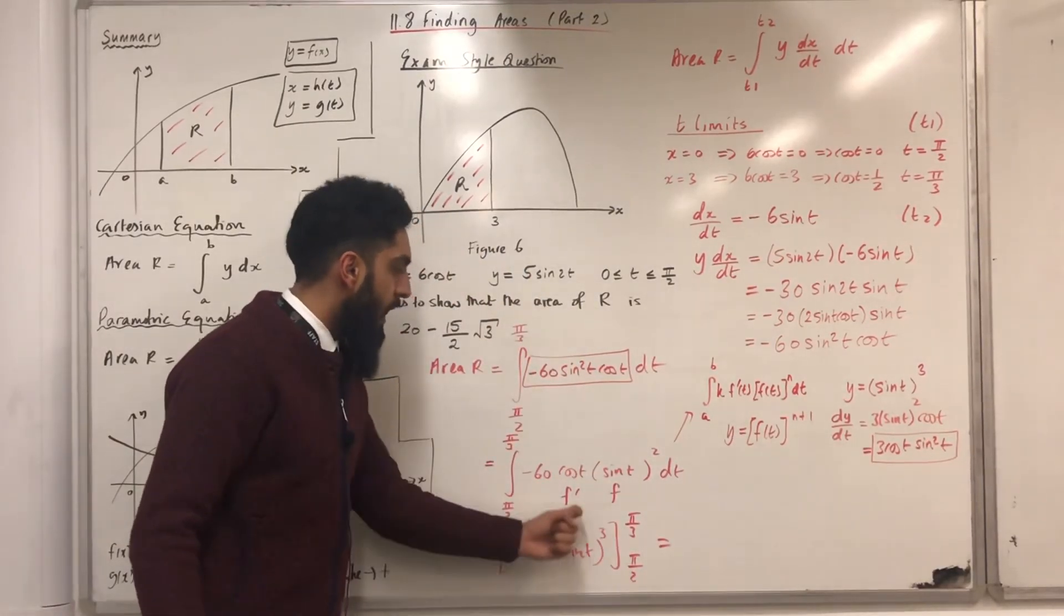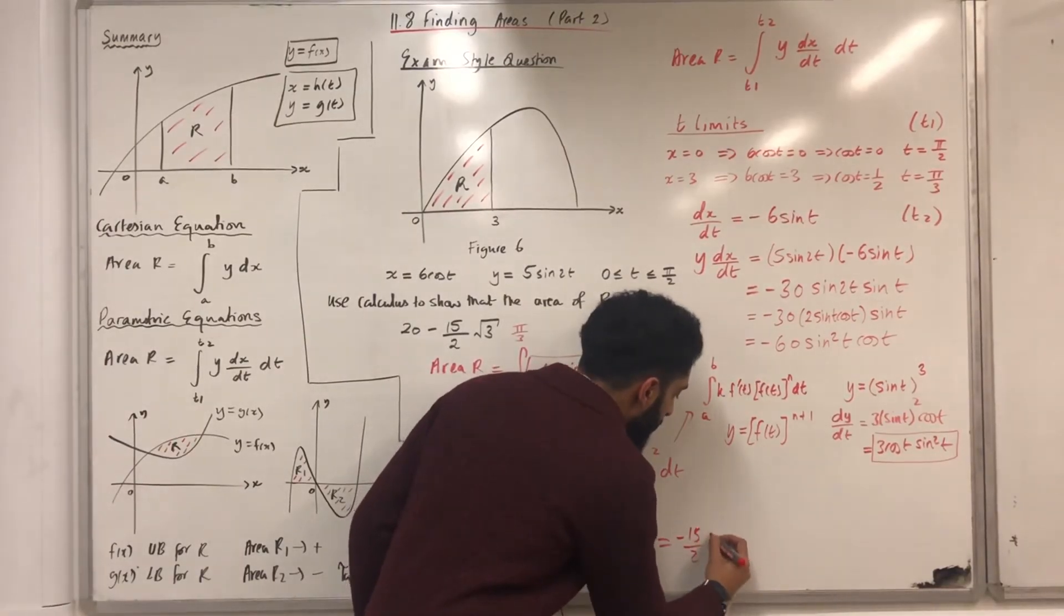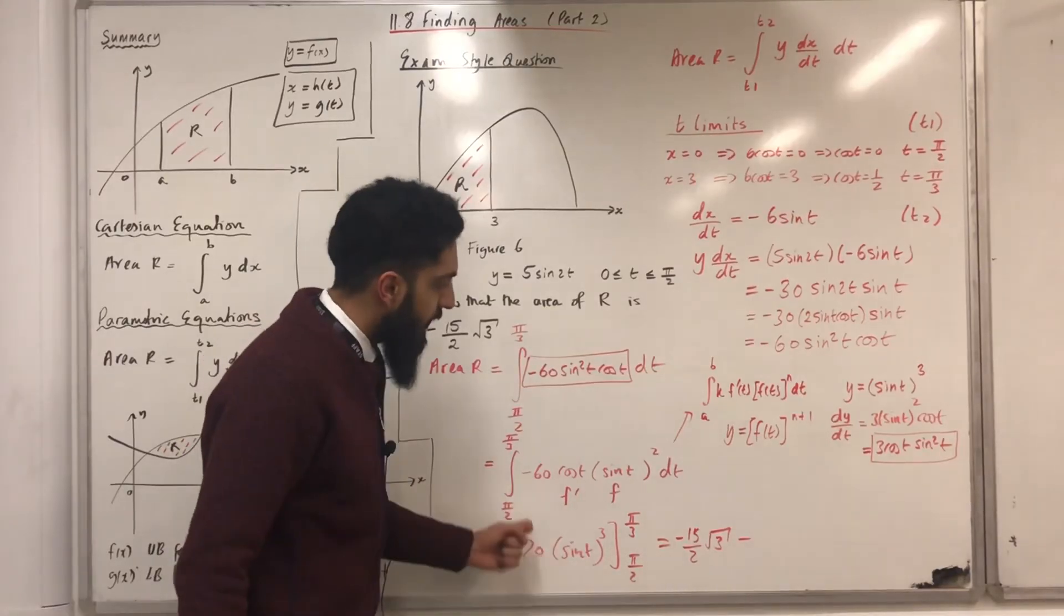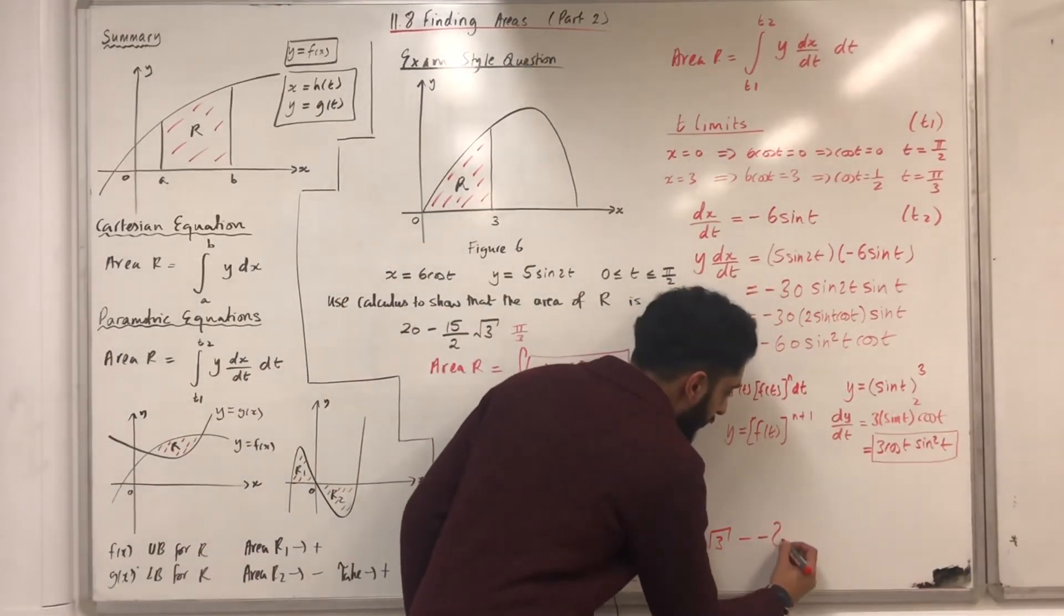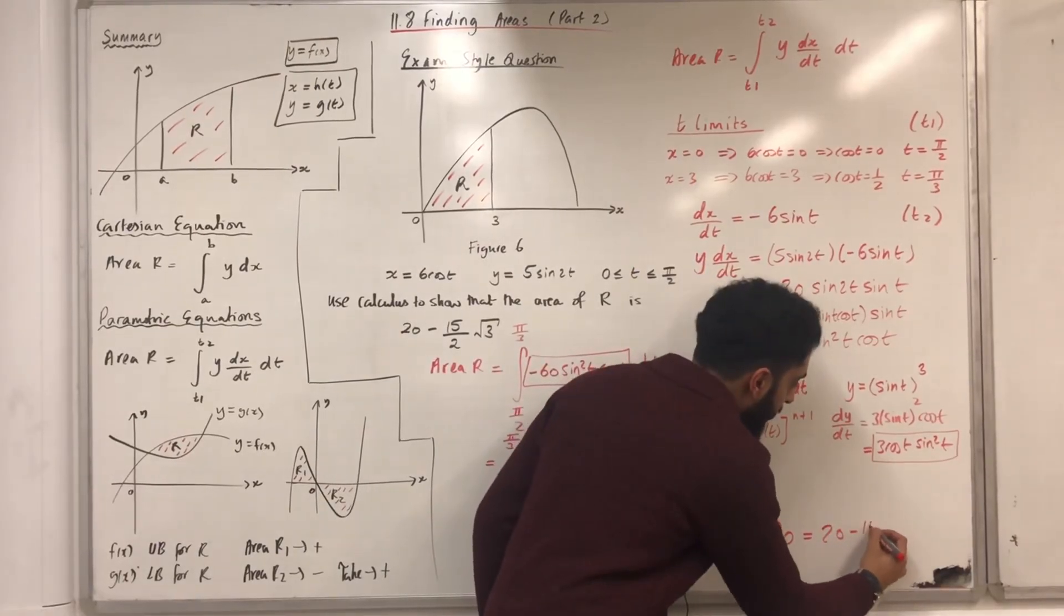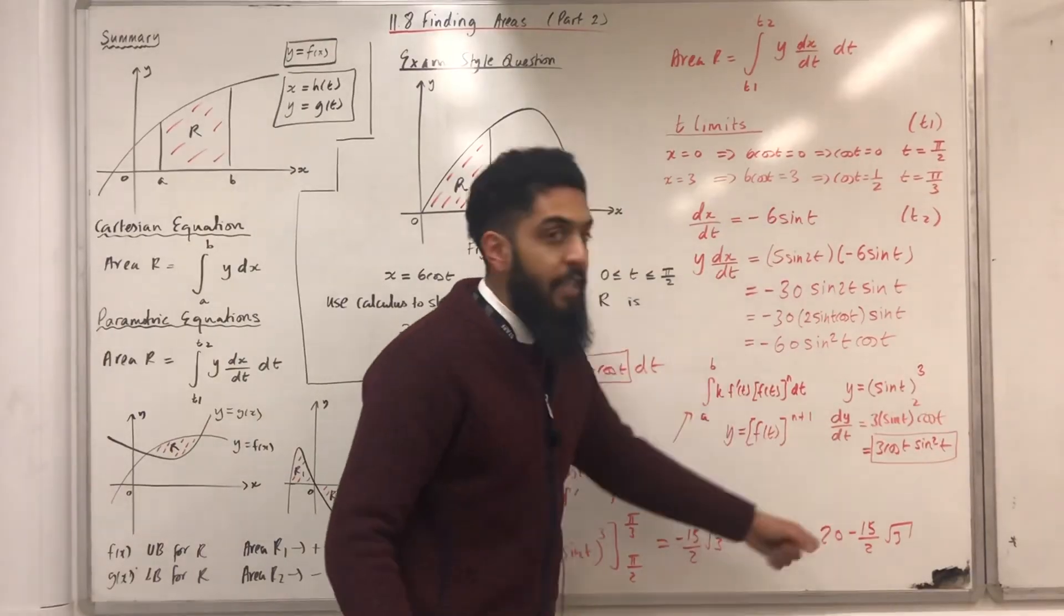Now, I'll substitute pi over 3 into here to give me minus 15 over 2 square root 3, take away, I'll substitute pi over 2 into here to give me minus 20. I can rewrite this as 20 minus 15 over 2 square root 3. And that is precisely what I needed.